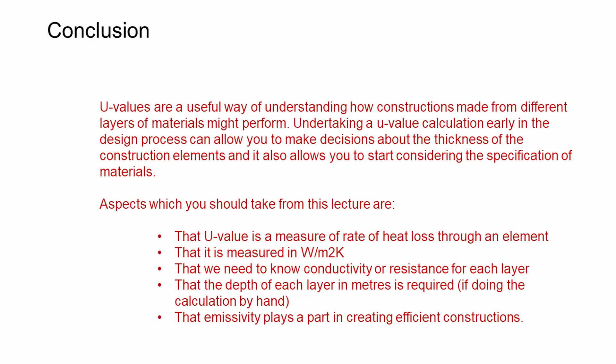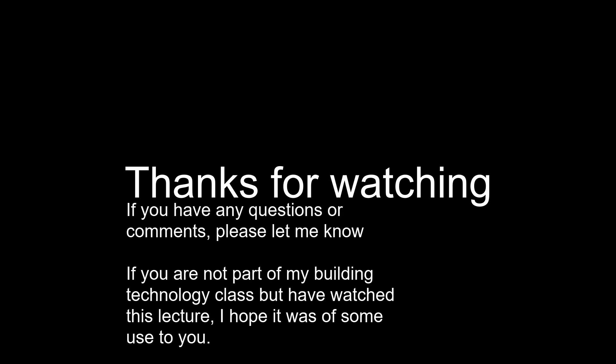In conclusion, U-values are a useful way of understanding how constructions made from different layers of materials might perform. Undertaking a U-value calculation early in the design process allows you to make decisions about the thickness of construction elements and the specification of materials. Key points from this lecture: U-value is a measure of the rate of heat loss through an element, measured in watts per metre squared kelvin. You need conductivity or resistance for each layer, and the depth of each layer in metres. If doing the calculation on a computer, they tend to work in millimetres. Emissivity plays a part in creating efficient constructions. The next lecture will be a worked example using real values, followed by one done through a calculator.